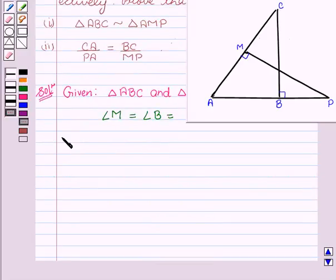Now we have to show that triangle ABC is similar to triangle AMP. Now let's begin with the proof.